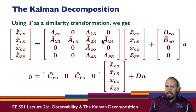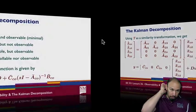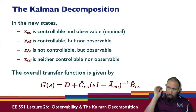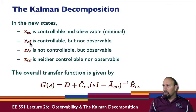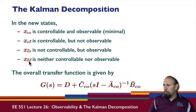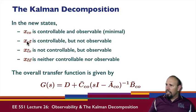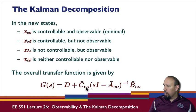We get something of this form, with the different subspaces and their corresponding states. The controllable and observable part, the controllable but not observable part, the not controllable but observable part, and the neither controllable nor observable part. The overall transfer function is given only by the part that is both controllable and observable.